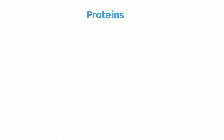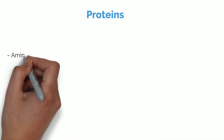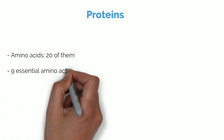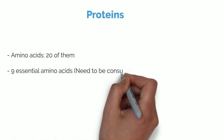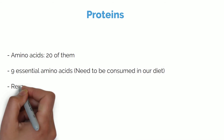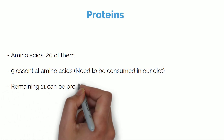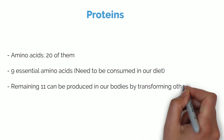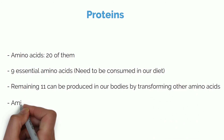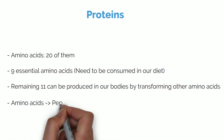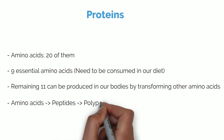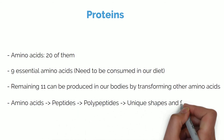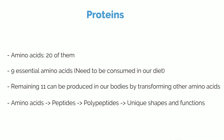Let's talk about proteins now. The building blocks of proteins are called amino acids and there are 20 of them. Nine of them are considered essential amino acids as they need to be in our diets, and the remaining 11 can be produced in our bodies by transforming other amino acids. These building blocks join together to form peptides, and then these peptides join together to form polypeptides, which then fold into themselves into different shapes, giving proteins their unique shape and function.